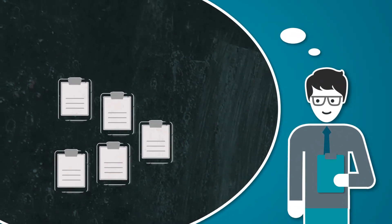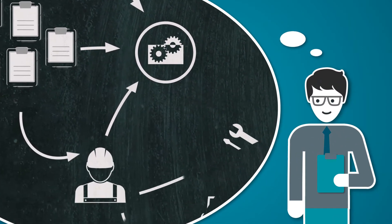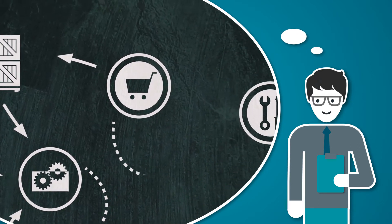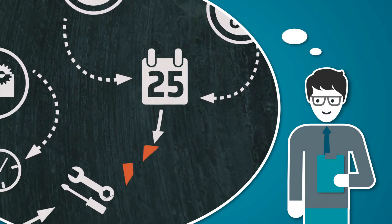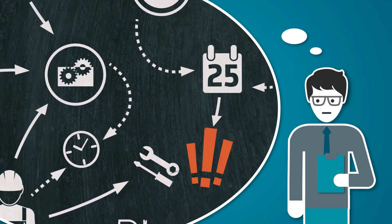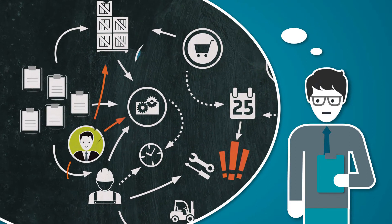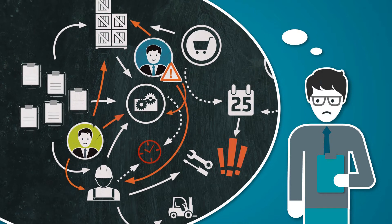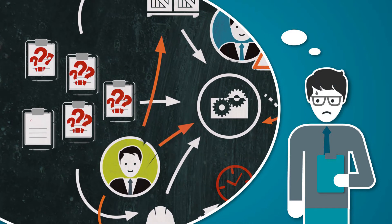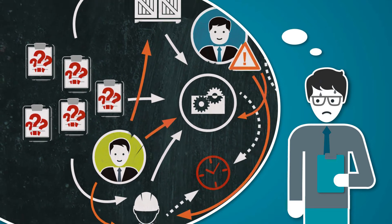The resources for the processing are strictly limited. He has to coordinate delivery dates with purchasing and assembly. Pretty complicated. If, for instance, short-term customer or high-priority orders mess with his planning, he can only estimate the consequences for running orders through a lot of laborious planning work.